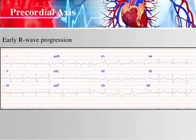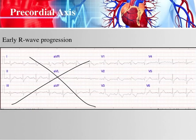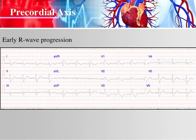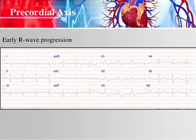Here's an example of early R wave progression — this is a right bundle branch block, which is on the differential for early R wave progression. In V1, right off the bat, you get a pretty tall R wave, which is never normal. V1 should be almost all negative. That tall R wave in V1 tells us we have early R wave progression. This EKG shows a wide QRS, a supraventricular rhythm because we have P waves, and S waves in V1 and V6. For more on identifying bundle branch blocks, refer to the two-part tutorial on that topic.